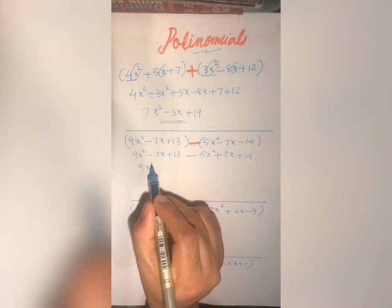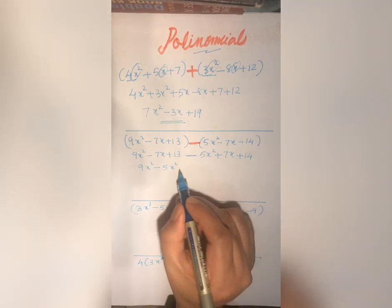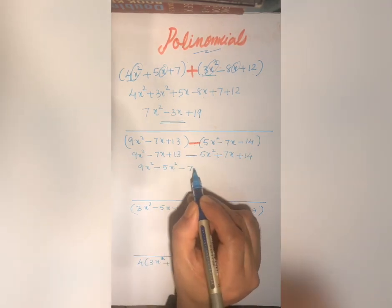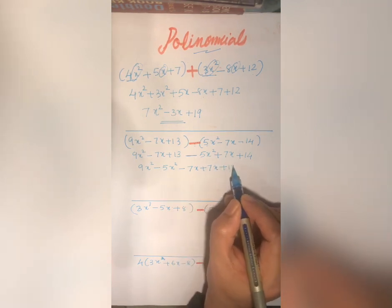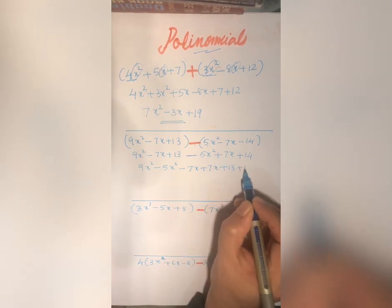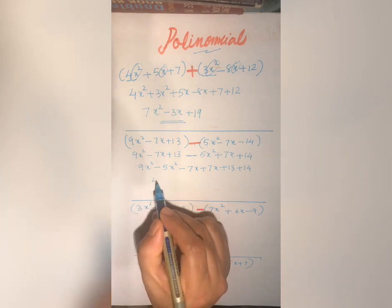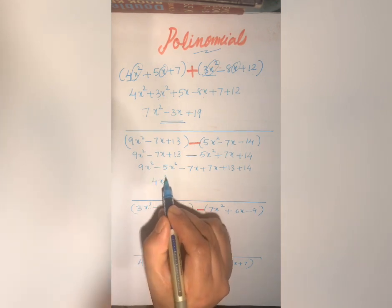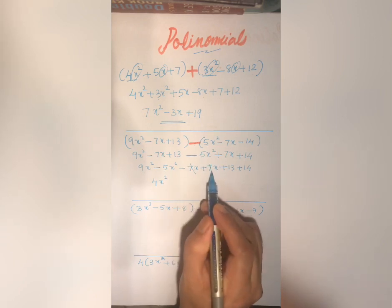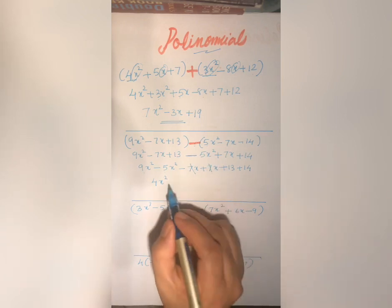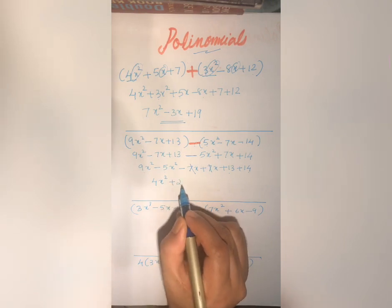Now combine the like terms: 9x square minus 5x square, minus 7x plus 7x, plus 13 plus 14. 9 minus 5 is 4x square. Minus 7x and plus 7x will be cancelled. 13 plus 14 will be 27.